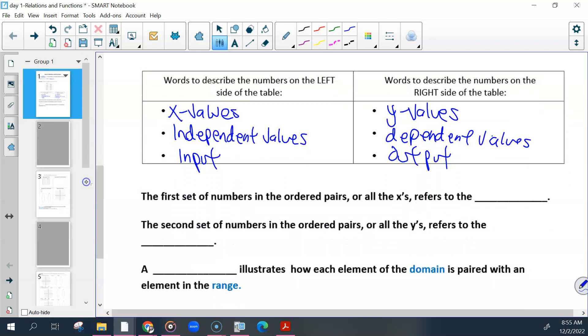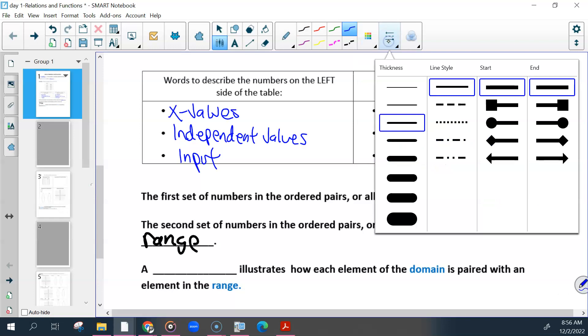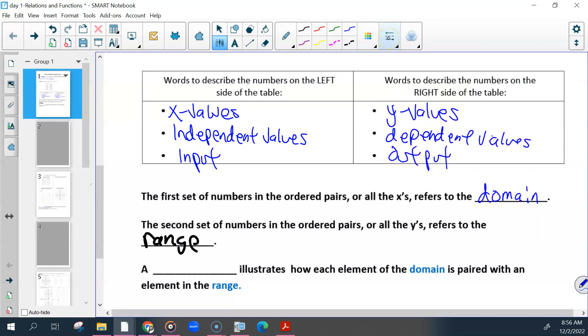Good words to think about. Anytime you see these words, be thinking x or y. So then going back to what I've been saying earlier, the first set of numbers in an ordered pair, or all of the x's, refers to the domain. That is another way we're going to describe our x values. The second set of numbers in the ordered pairs, all of your y's, refers to the range. And then we are going to use something called a mapping that illustrates how each element in the domain is paired with an element in the range.